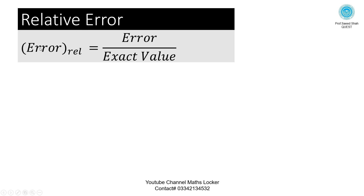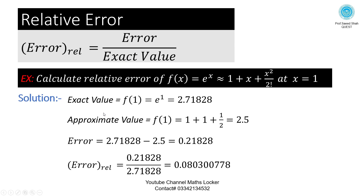Relative error — written in notation as error_r — is equal to error divided by exact value. Exercise: calculate the relative error of f(x) = e^x ≈ 1 + x + x²/2! at x = 1. Taking exact value, approximate value, and error, then placing error and exact value in the formula, we get the relative error.